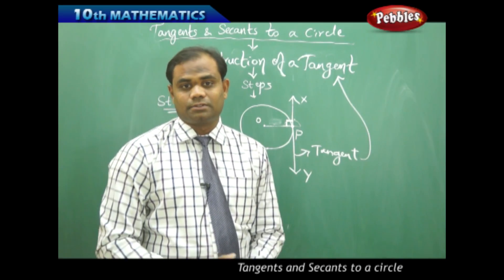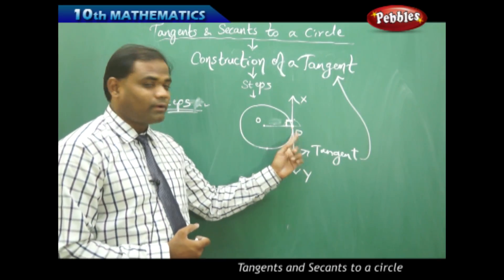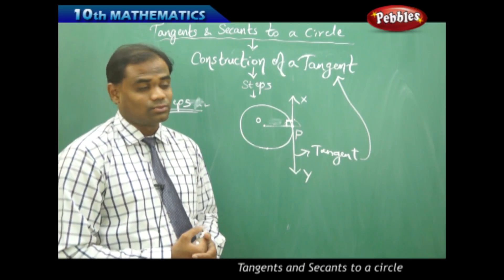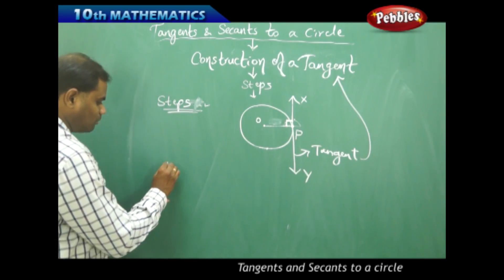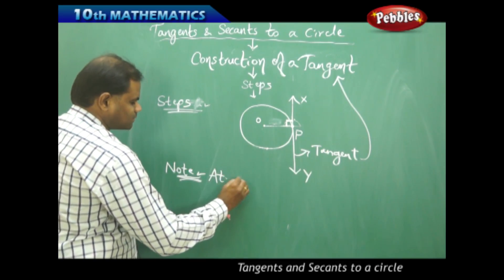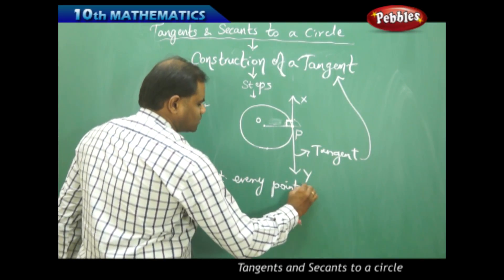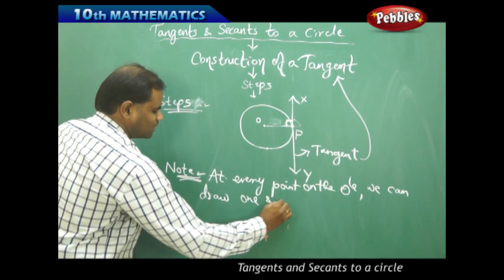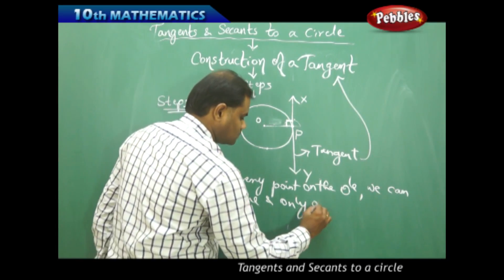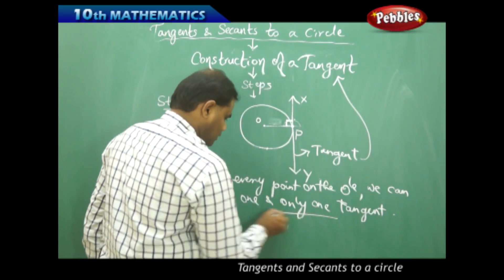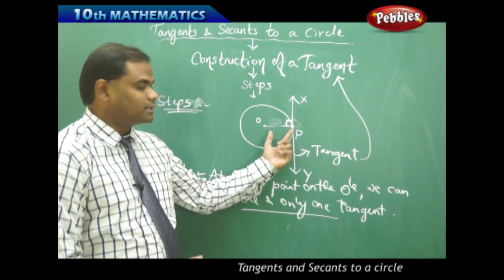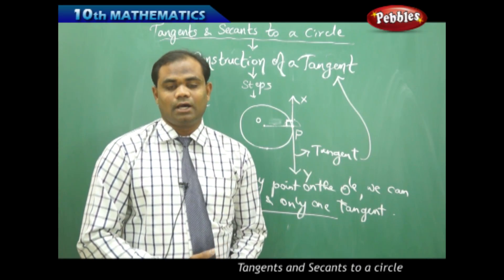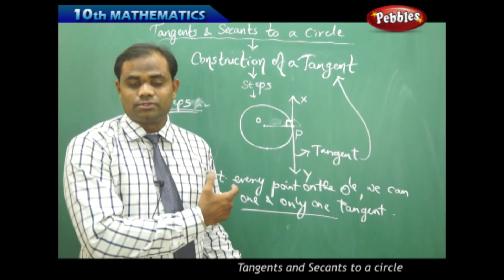Radius is perpendicular to tangent. This construction makes it clear that for every point there is only one tangent, because if I take a point on the circle and draw the tangent, I cannot have two tangents passing through the same point. The learning outcome is: at every point on the circle, we can draw one and only one tangent. No two tangents can be drawn from one point on the circle.